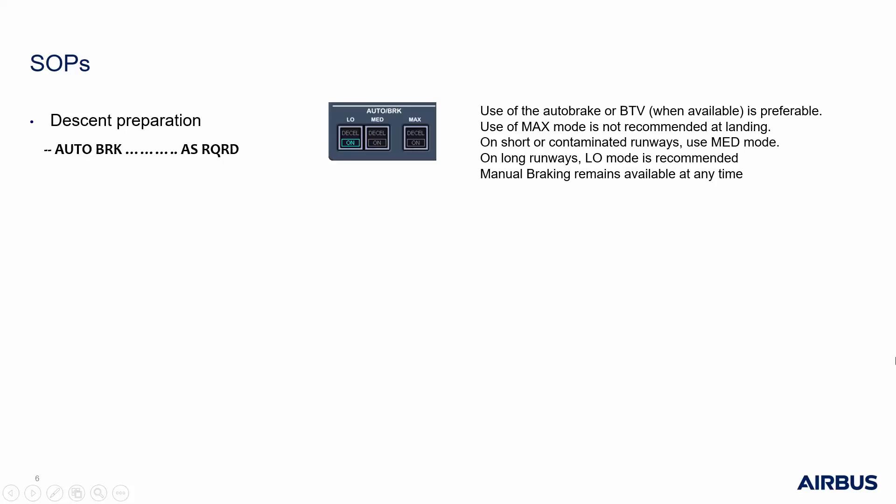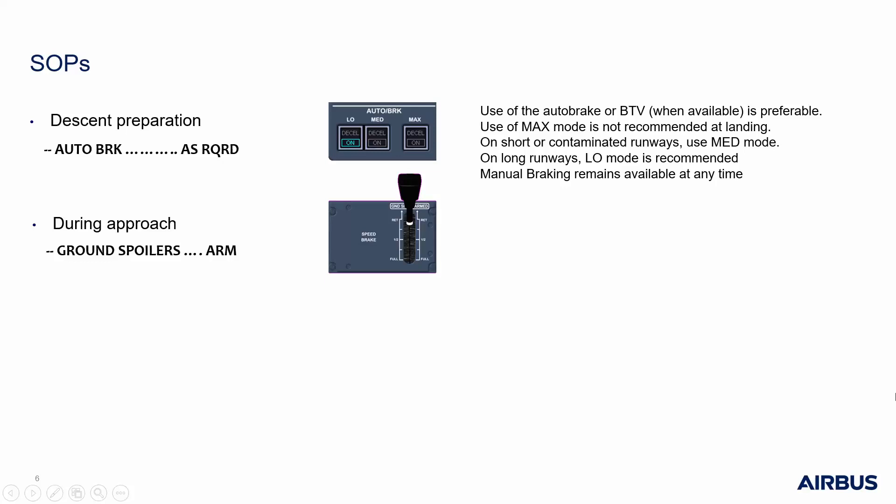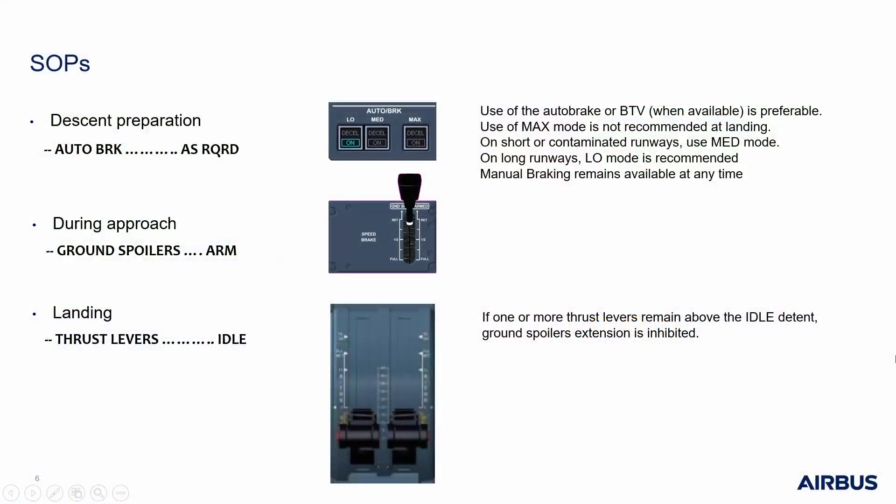The braking mode is reviewed and confirmed during the approach checklist. During the approach, after gear down, the pilot monitoring arms the ground spoilers. The ground spoilers are confirmed armed through the landing ECAM memo — landing no blue. In addition, the ground spoilers are part of the ECAM landing memo displayed on the running display. During the flare, the pilot flying sets the thrust levers to idle. If one or more thrust levers remain above idle detent, ground spoilers extension is inhibited.